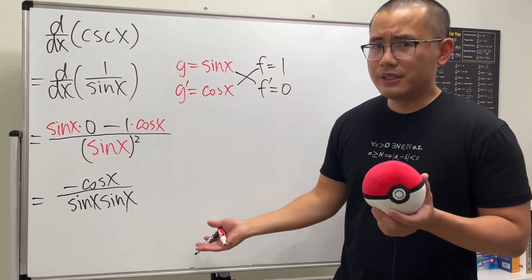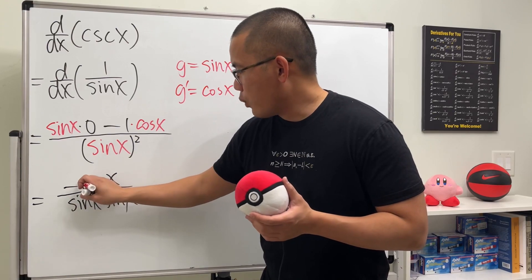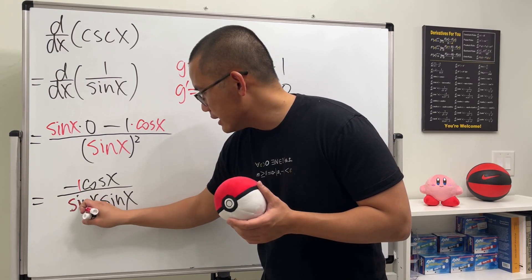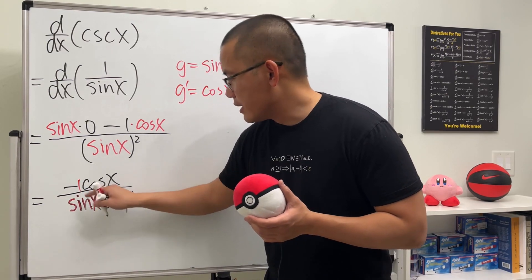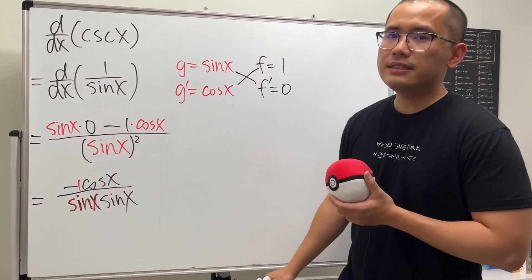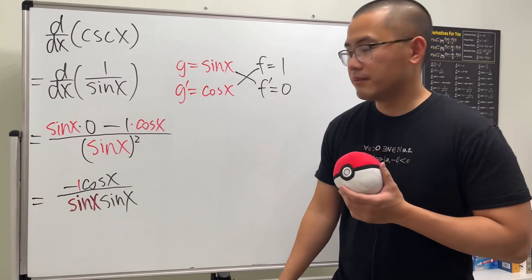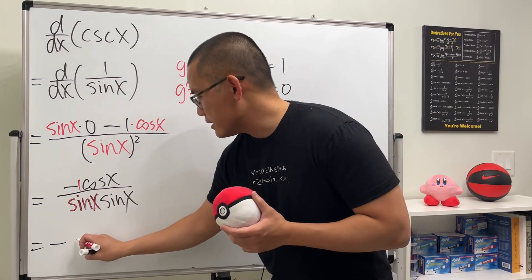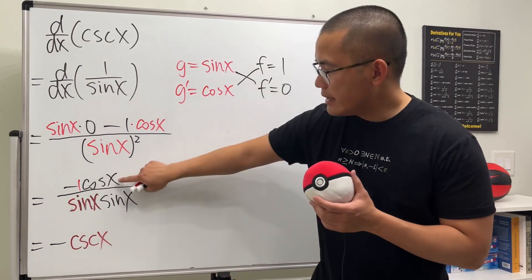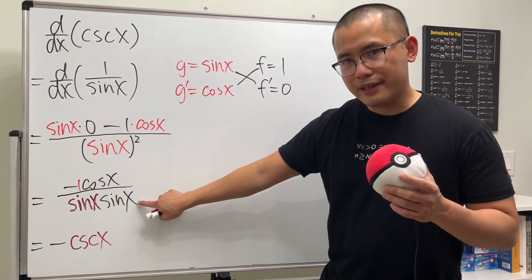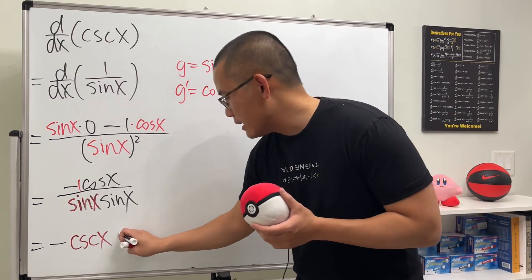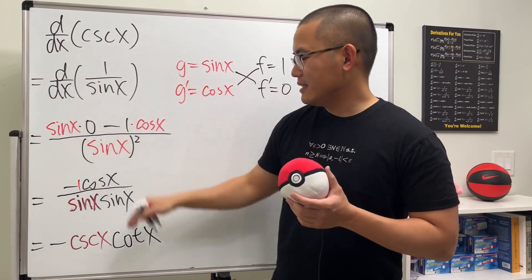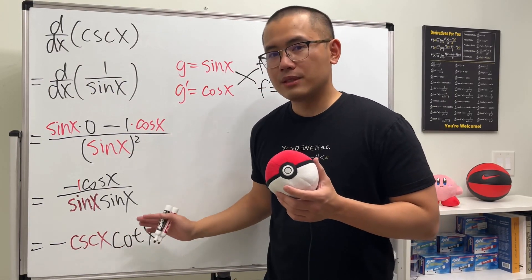This right here is like negative 1, and I'm going to pair that 1 with this sine x right here, because 1 over sine x can be rewritten as cosecant. So we have negative all the way in the front, and 1 over sine x is cosecant x. And then when we have cosine x over sine x, that's the same as cotangent x. Therefore, the derivative of cosecant x is negative cosecant x times cotangent x.